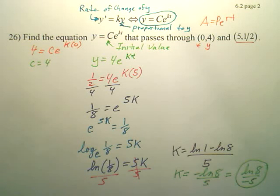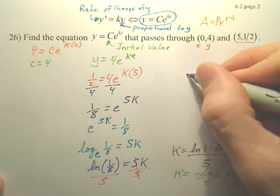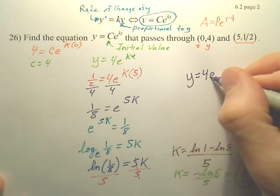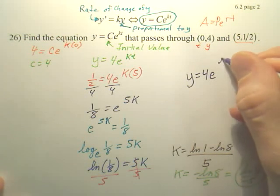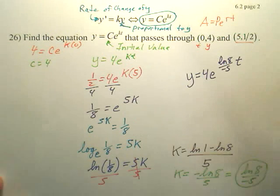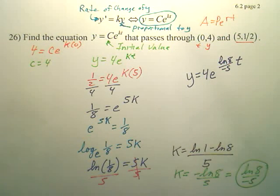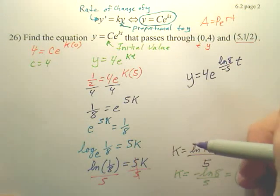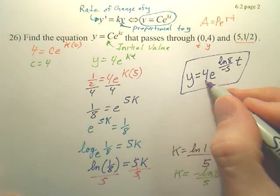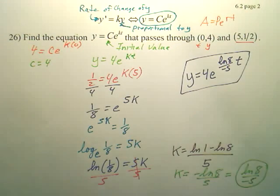Now let's now plug this in. And we have our equation. So our equation is simply y equals 4e^((ln(8)/(-5))t). And that is our equation. There's our first value, there's our k.